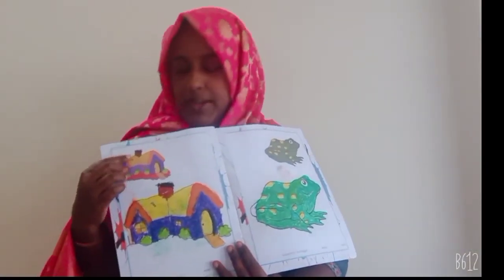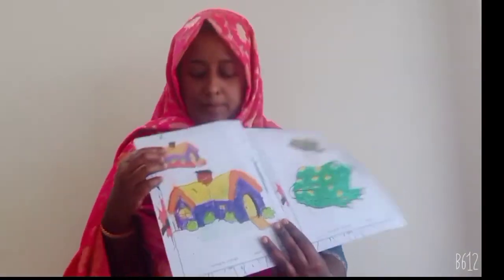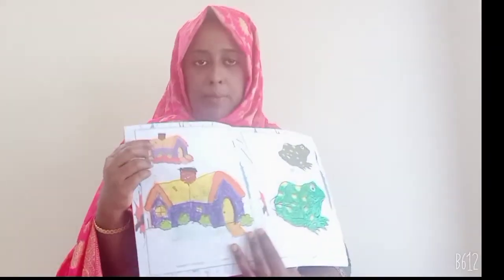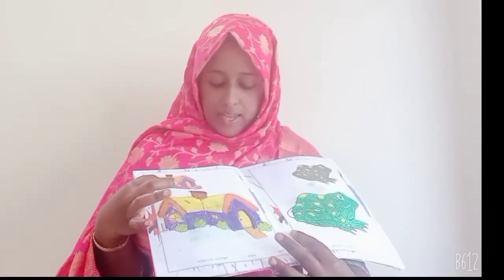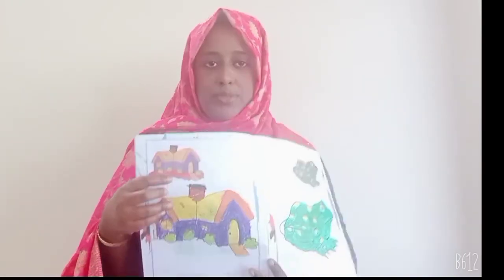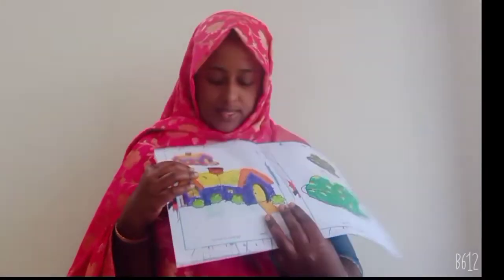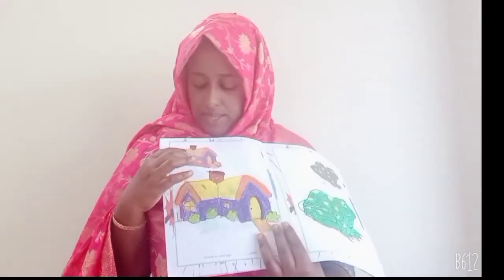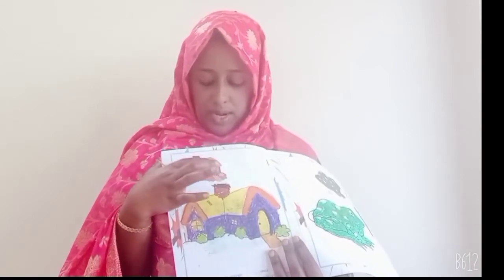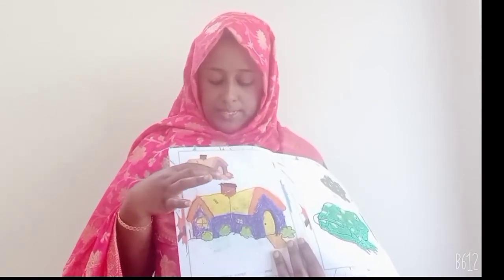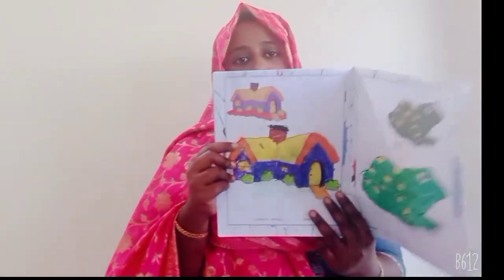This is how you do color here. What is this? Yes, a house. This is a house. This is how you do blue color. This is yellow color, orange, red, green. How do you do this? This is how you do this house.